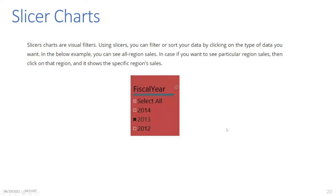Slicer Charts: Slicer charts are visual filters. Using slicers, you can filter or sort your data by clicking on the type of data you want. For example, you can see all region sales, and if you want to see a particular region's sales, you click on that region to show its specific sales data.